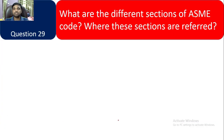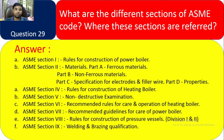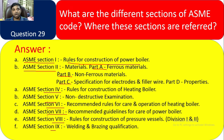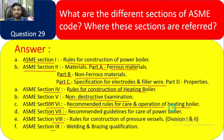Question 29: What are the different sections of the ASME code and what do they refer to? ASME Section 1: rules for construction of power boilers. ASME Section 2: Part A — ferrous material; Part B — non-ferrous material; Part C — specifications for welding filler metal. Section 4: rules for construction of heating boilers. Section 5: non-destructive examination. Section 6: recommended rules for care and operation of heating boilers. Section 7: recommended guidelines for care of power boilers. Section 8: rules for construction of pressure vessels (two divisions). Section 9: welding and brazing qualification.